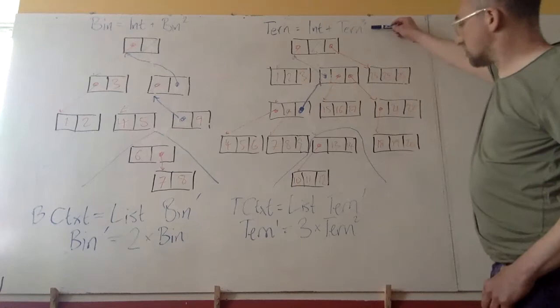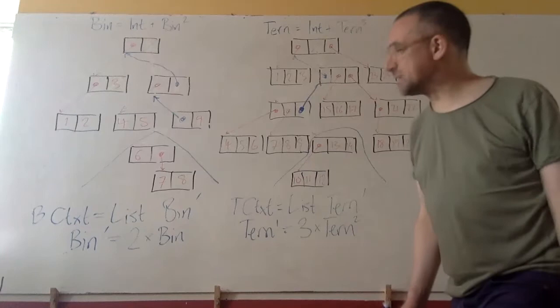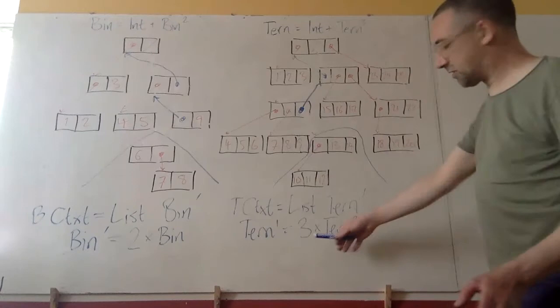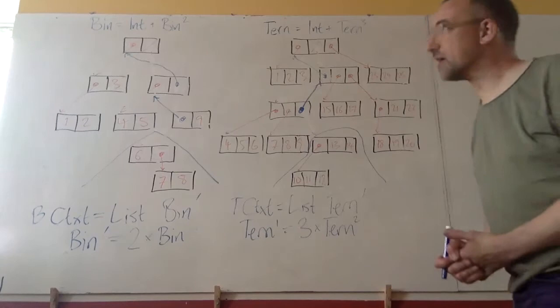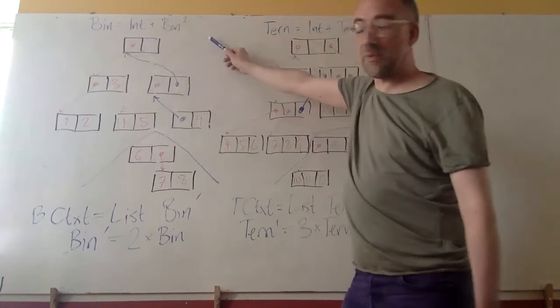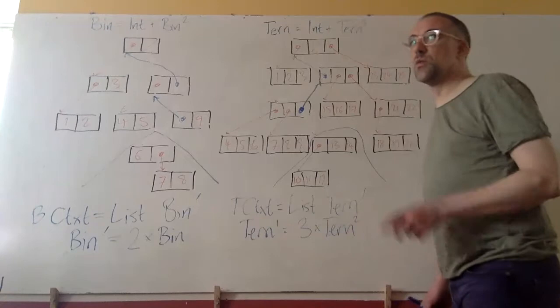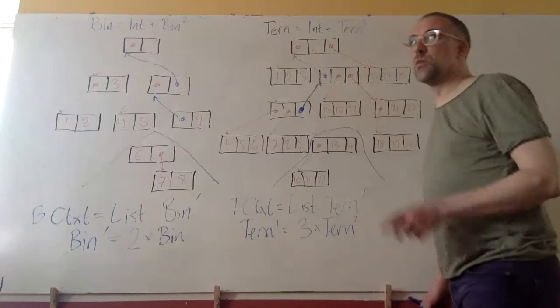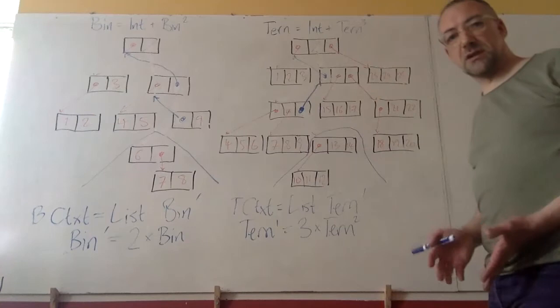Looking at these equations: int + bin² becomes 2·bin, and int + tern³ becomes 3·tern². I thought: that's an outrageous coincidence, if it is coincidence. What seems to be going on here is symbolic differentiation. I take the defining equation of the type and differentiate it with respect to the type, and out comes the formula for the step. It makes a certain amount of sense because it's about what's the contribution made by that one thing — we're picking one. It looks like there's some differential calculus going on here.